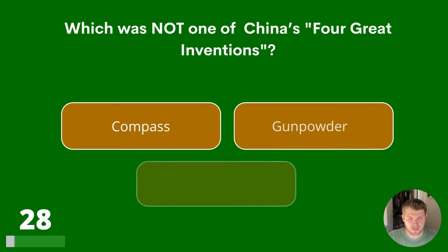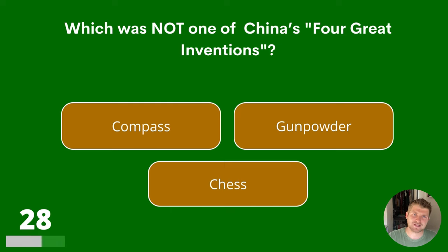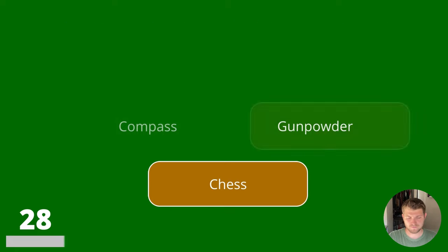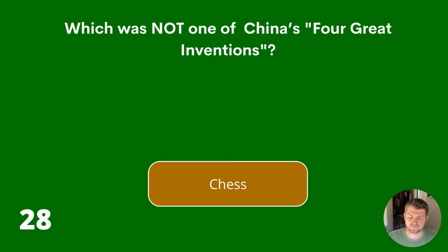Question 28. Which was not one of China's four great inventions? Compass, Gunpowder or Chess? The answer is Chess.